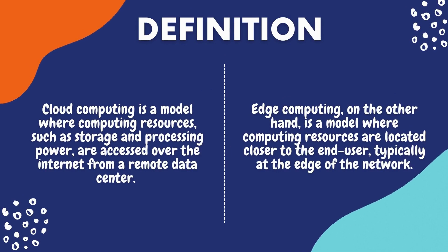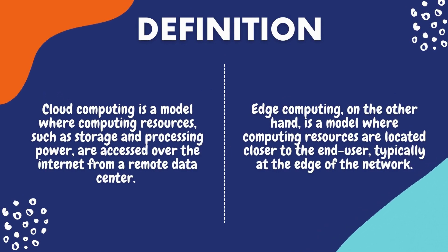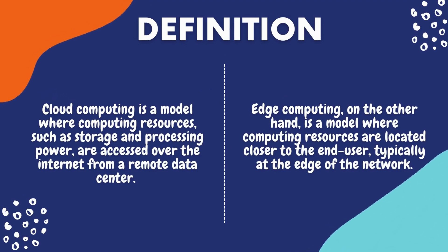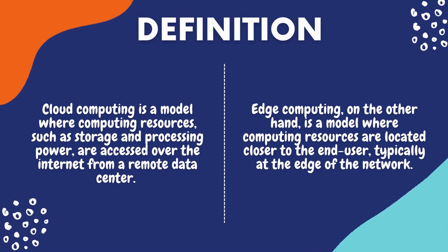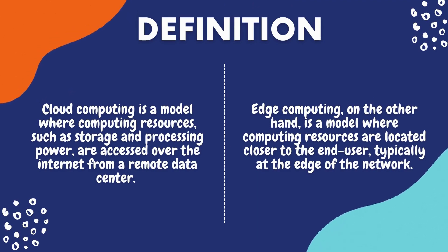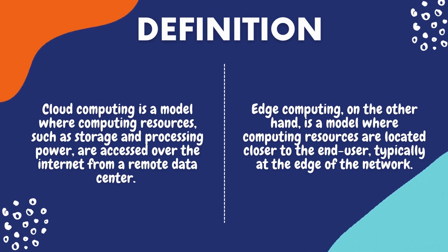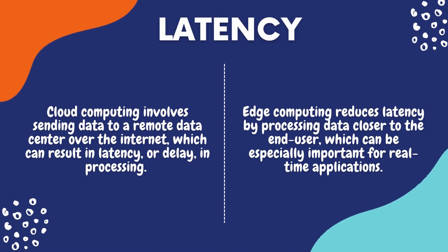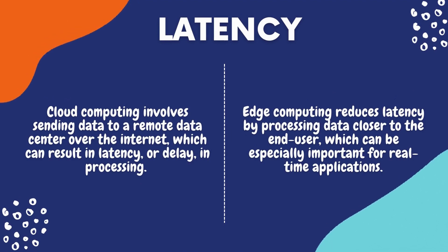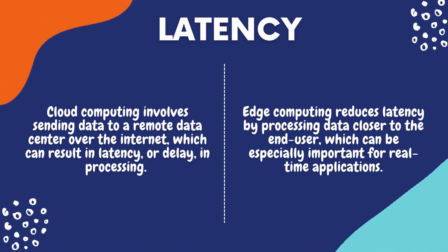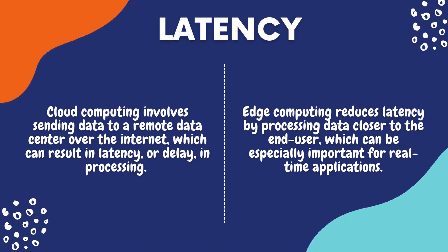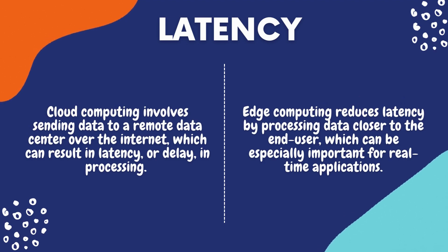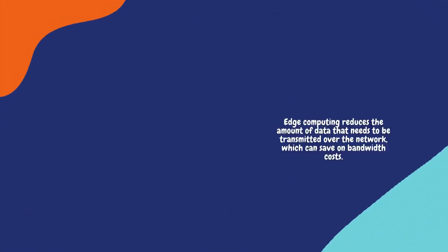Now let's talk about the core differences between cloud computing and edge computing. Definition: cloud computing is a model where computing resources such as storage and processing power are accessed over the internet from a remote data center; edge computing is a model where computing resources are located closer to the end user, typically at the edge of the network. Latency: cloud computing involves sending data to a remote data center over the internet, which can result in latency or delay in processing; edge computing reduces latency by processing data closer to the end user, which is especially important for real-time applications.